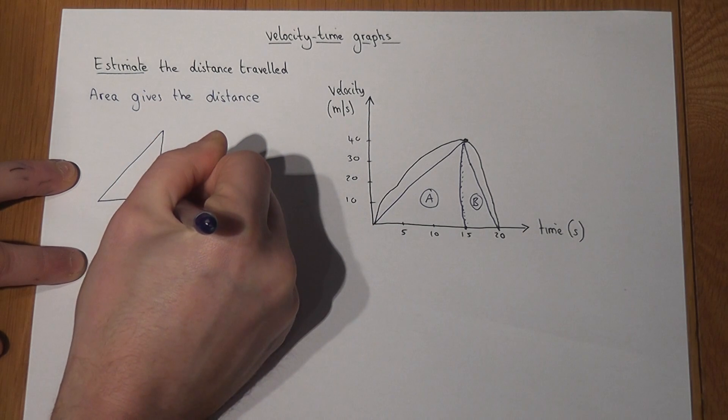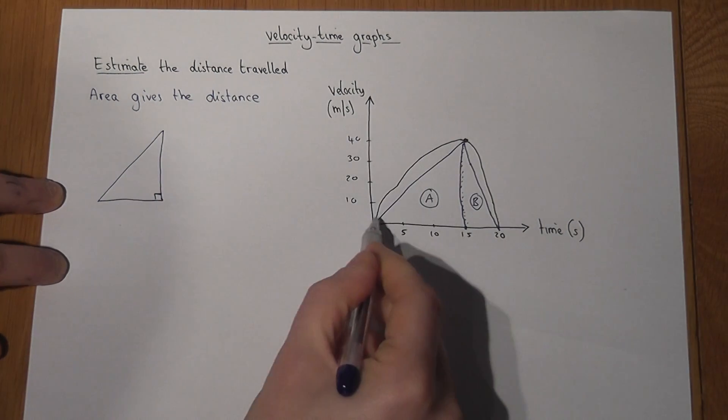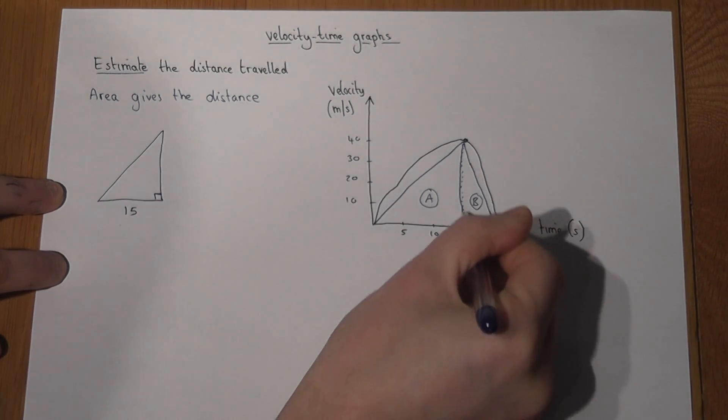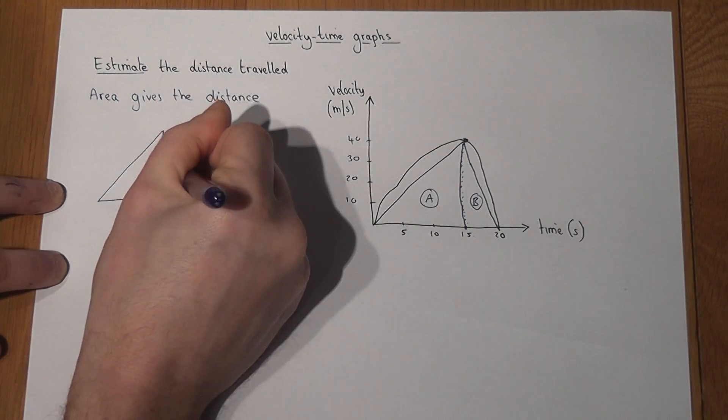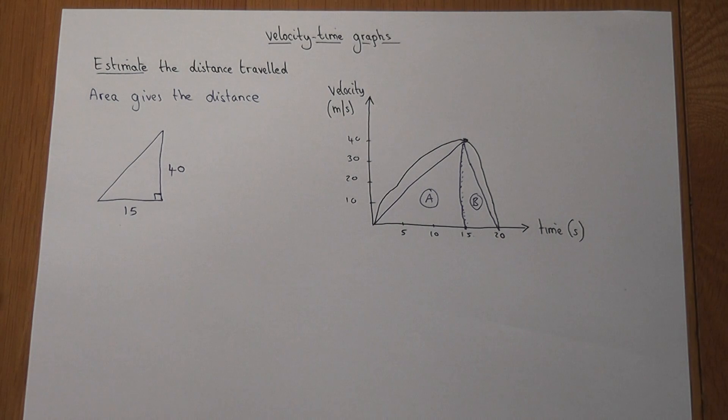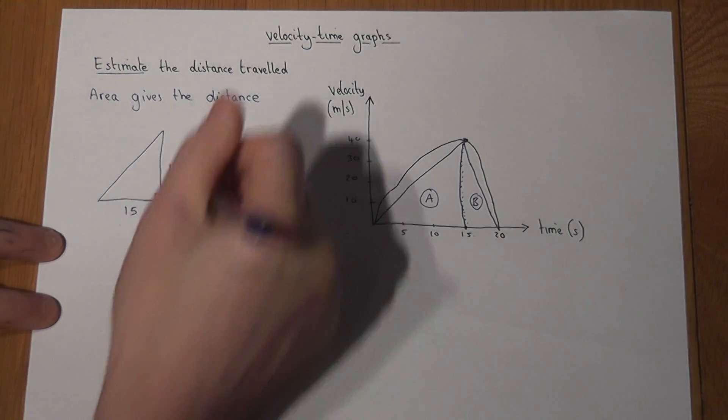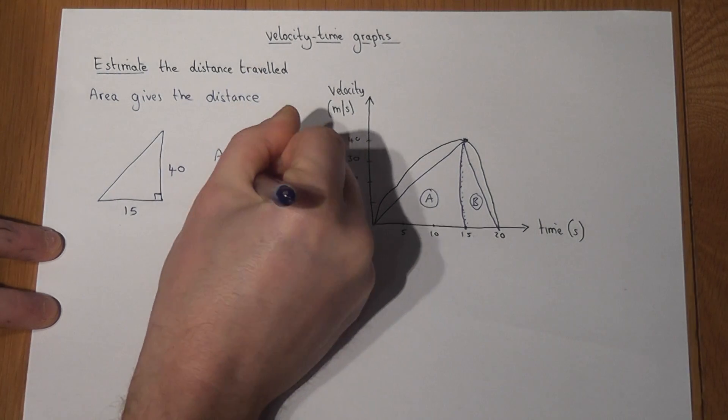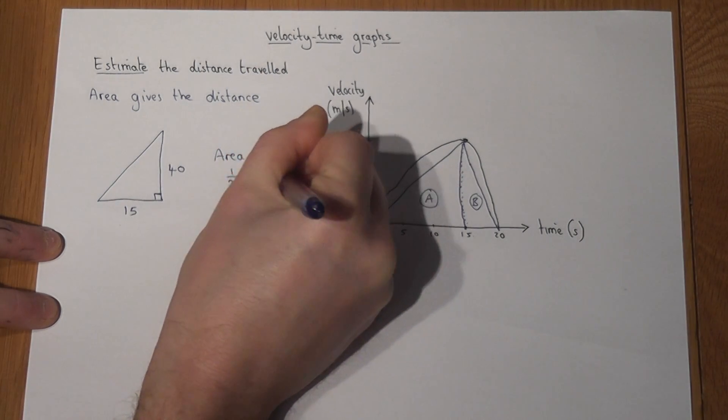Triangle A has got a base between 0 and 15, so a base of 15, and it goes up to 40, so it's got a height of 40. Its area is just a half times base times height.